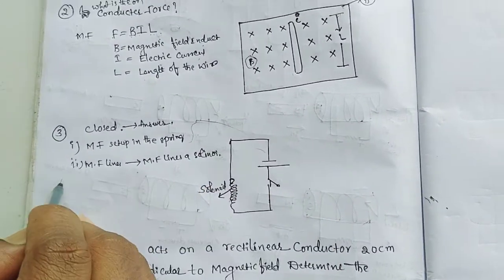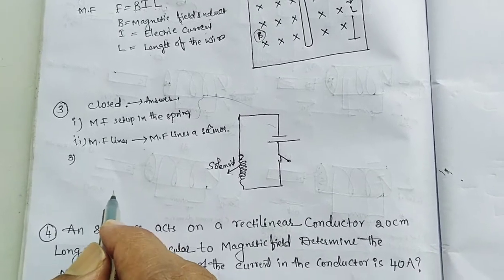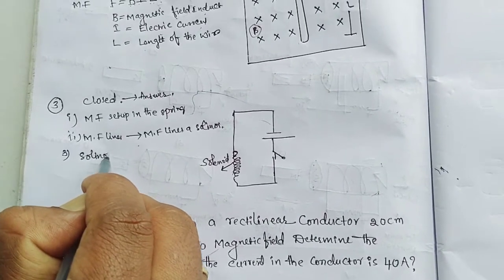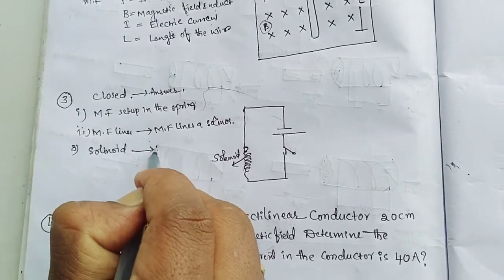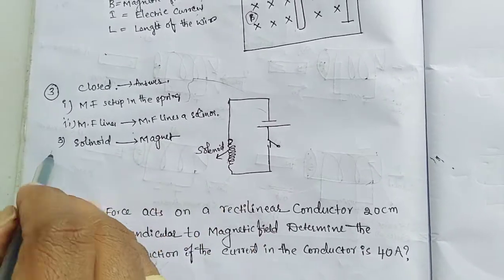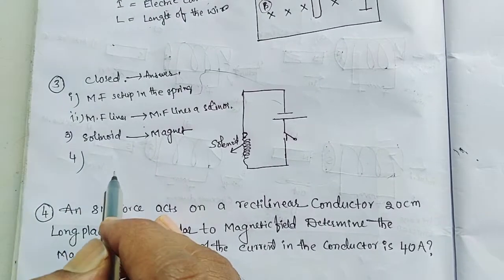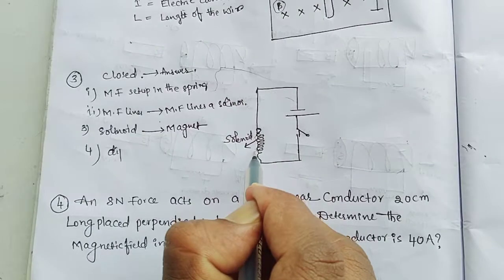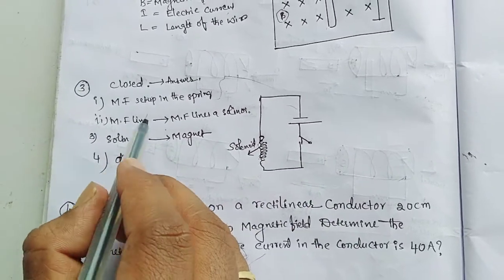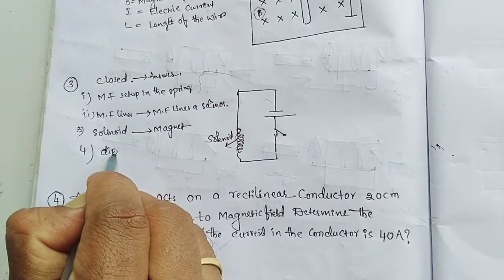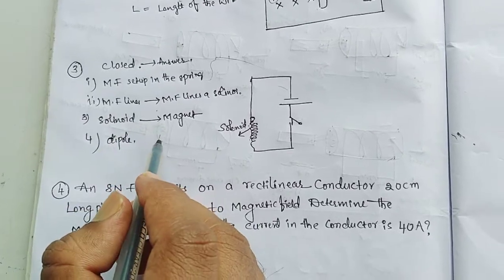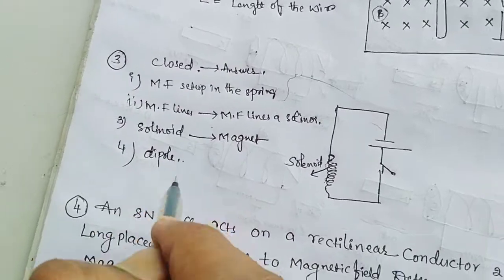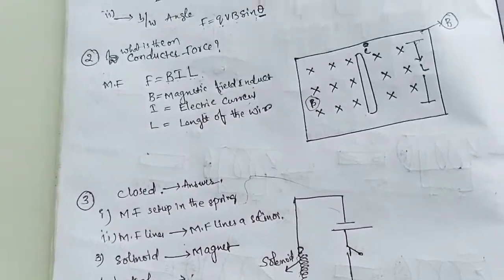Third point: the solenoid behaves like a magnet. Fourth point: each ring of the spring acts as a dipole — dipole means two poles — and the rings mutually attract each other, causing the spring to compress.